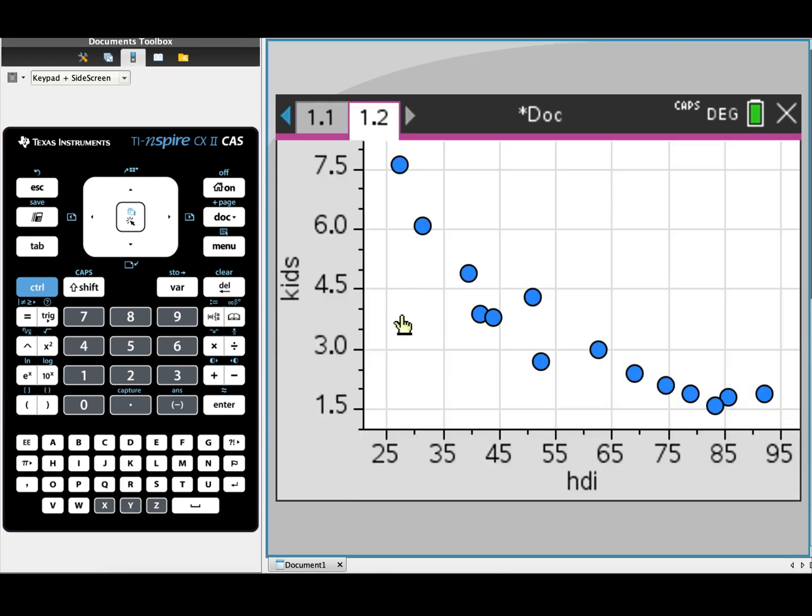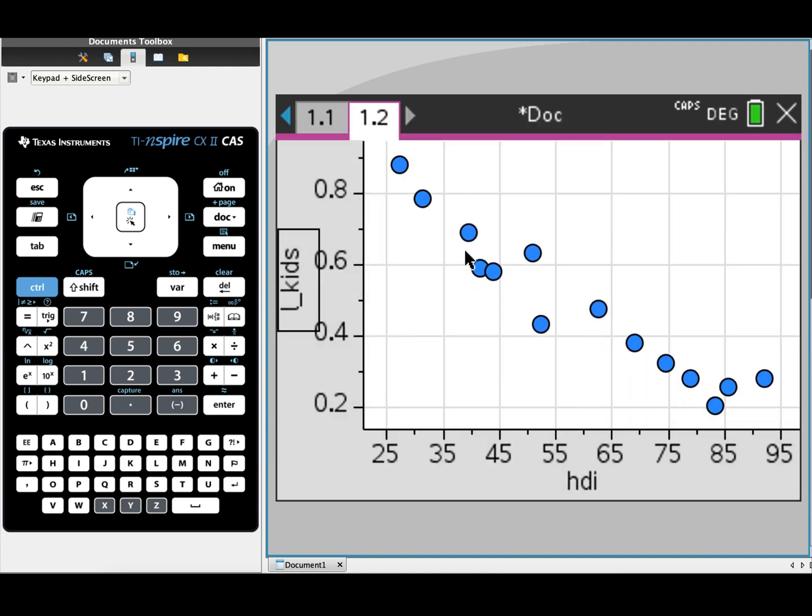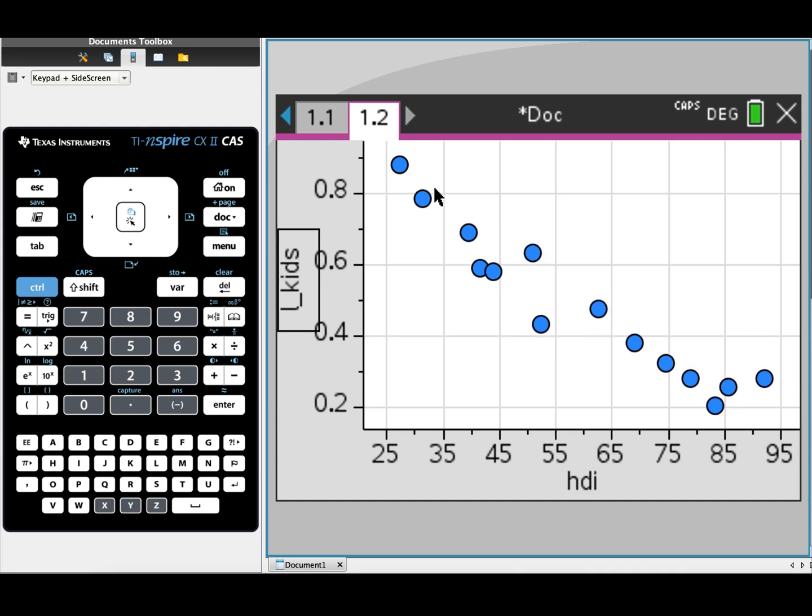Now I can go back into my scatter plot and I can change the Y variable or the response variable to be my log of kids numbers. And you can see that the data has now become much more linear. It's gone from a curved scatter plot into a much more linear graph.